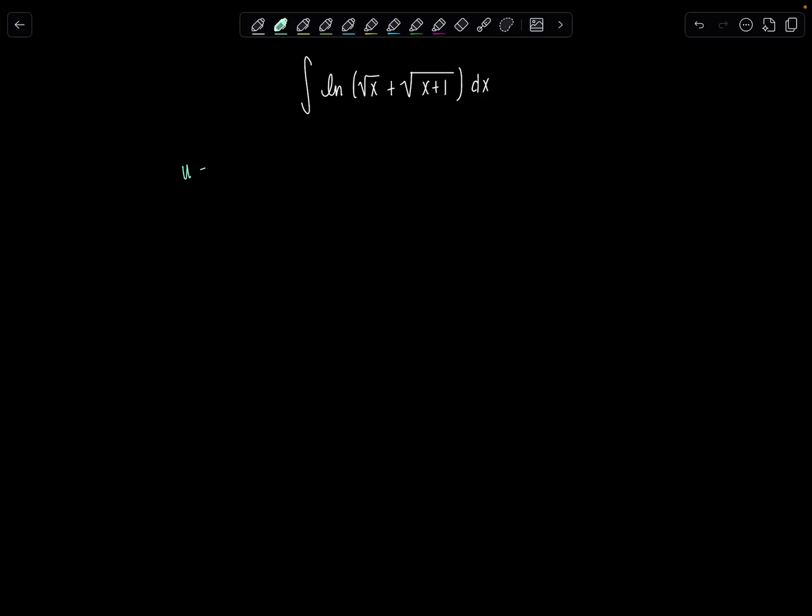Okay, so let's choose u and dv. No surprise when we have natural log in our argument, majority of the time we let that be u. Majority, notice I said majority, not always. So we have natural log square root of x plus square root of x plus 1, and then dv is just going to be dx.